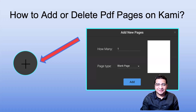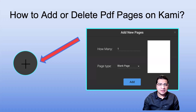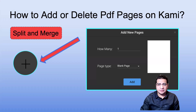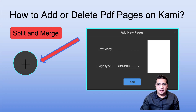Let's begin by showing you how to add pages. You'll see this little symbol here — the plus sign. When you press that button, it's actually going to prompt you to either insert a blank page and also how many pages you're going to insert. For my example here, you will also see the option of a split and merge.